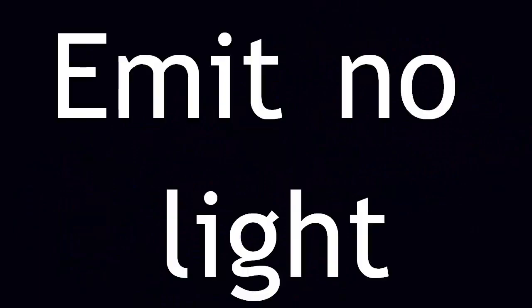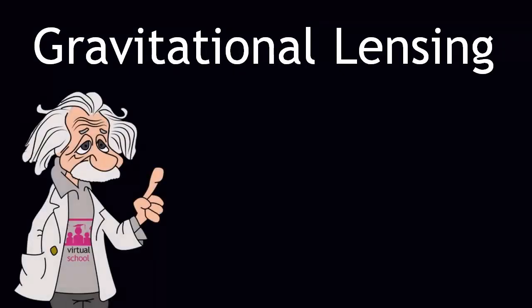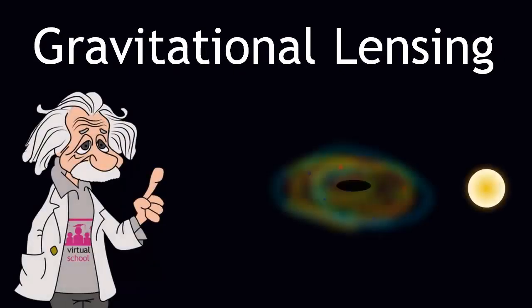Black holes in nature emit no light, yet we know they exist. How? Well, we see evidence of black holes through a process of gravitational lensing predicted by Albert Einstein in 1936, where light behind the black hole or other massive object is bent and distorted due to its gravitational field.